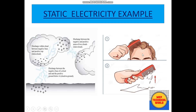Another example is combing hair. There is a transfer of electrons from hair to the comb by friction, resulting in negative charges on the comb and positive charges on the hair. If we move the comb towards small pieces of paper, the comb attracts the paper — proving that the comb is electrically charged.